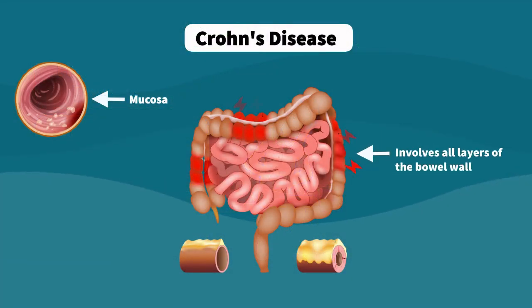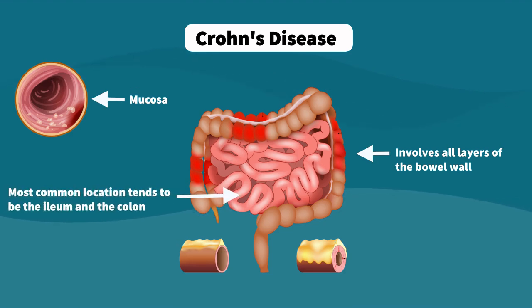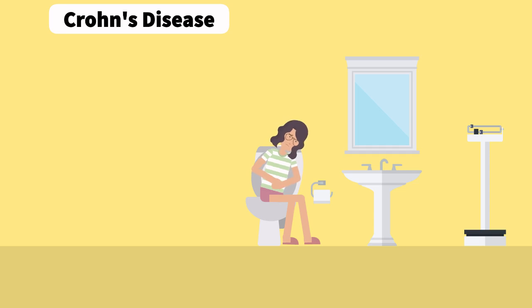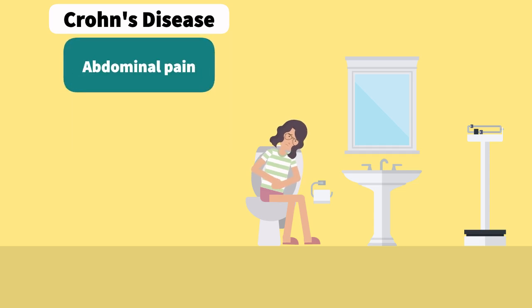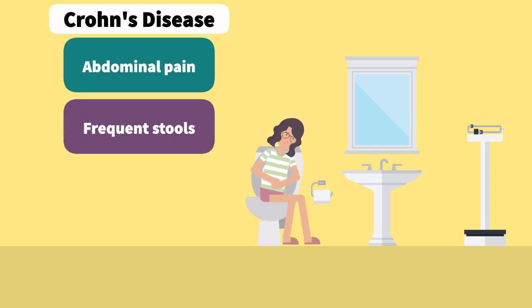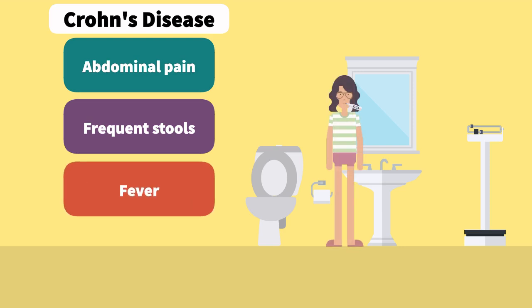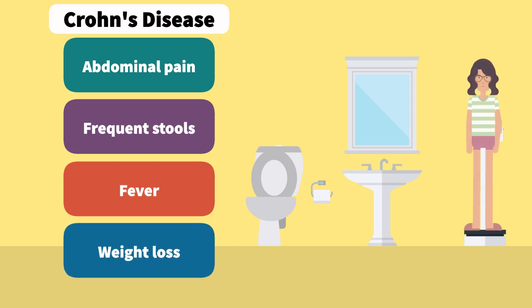Crohn's disease can affect any part of the gastrointestinal tract, from the mouth to the anus, but most commonly impacts the ileum and colon. Unlike ulcerative colitis, Crohn's disease involves all layers of the bowel wall. It is typically marked by abdominal pain and frequent stools. Patients may also experience systemic symptoms such as fever and unexplained weight loss, reflecting the broader impact of the disease.